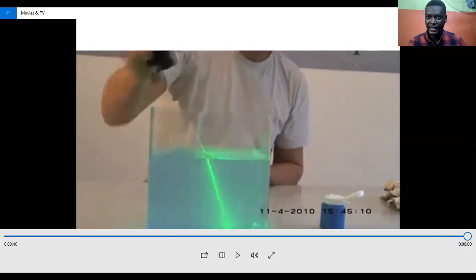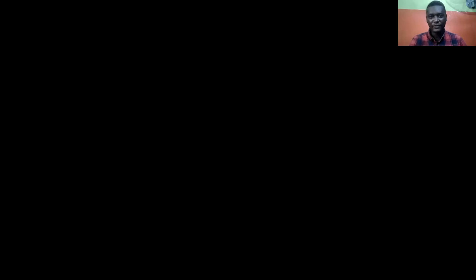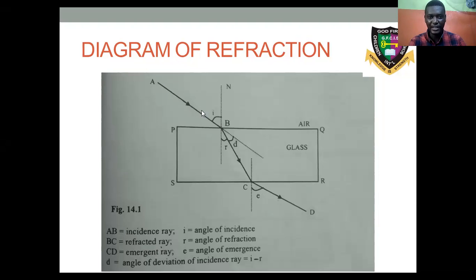Let's go back to our slide. From that video, you will notice there was a laser of light moving from A to B. Any light moving from A to B is what we call an incident ray. This incident ray must be traveling at an angle to the normal, and that angle is what we call the angle of incidence. Inside the second medium, it bends towards the normal. The bending of light is what we call refraction.